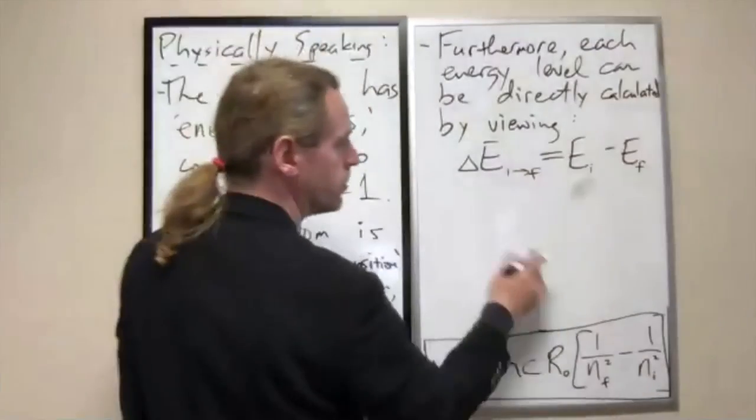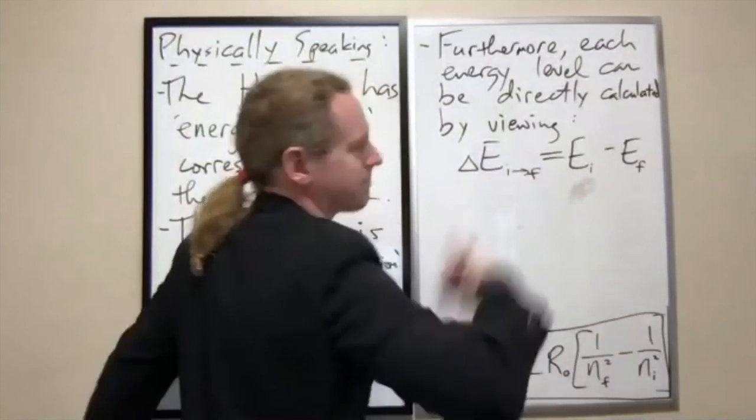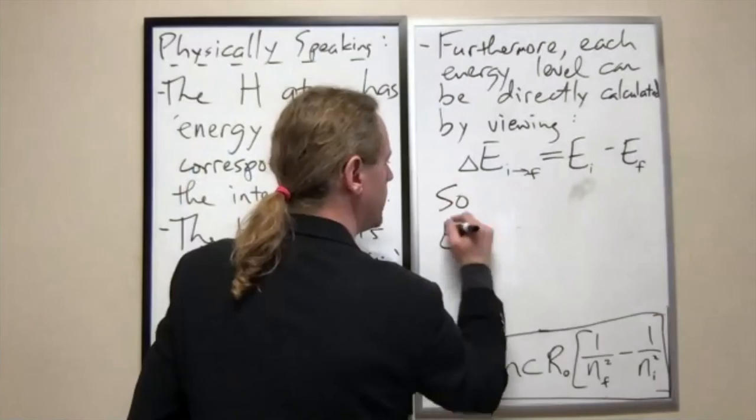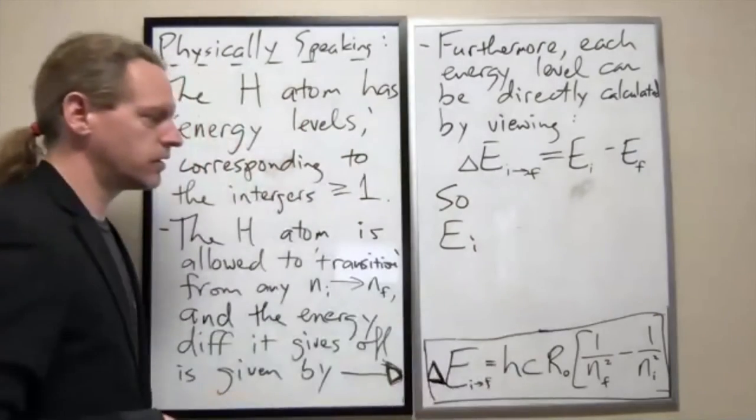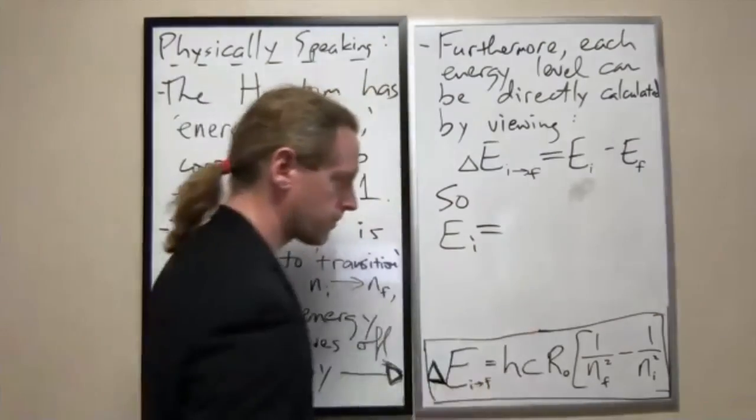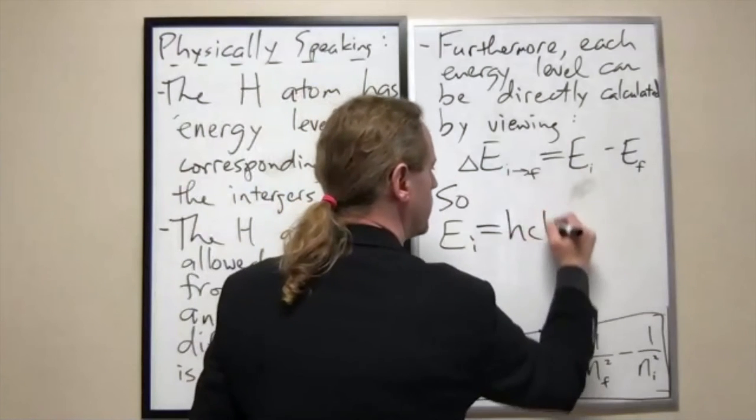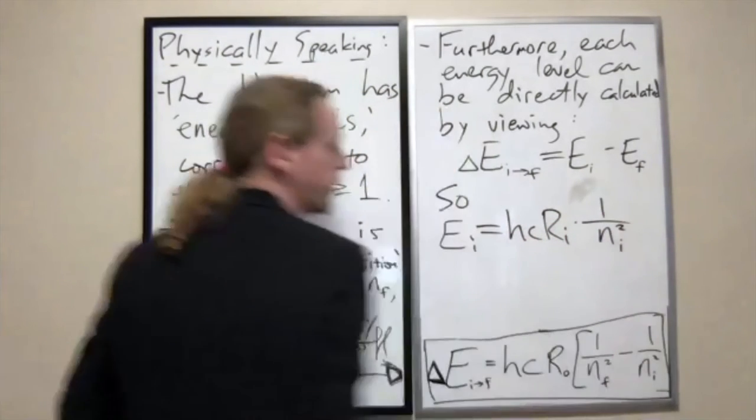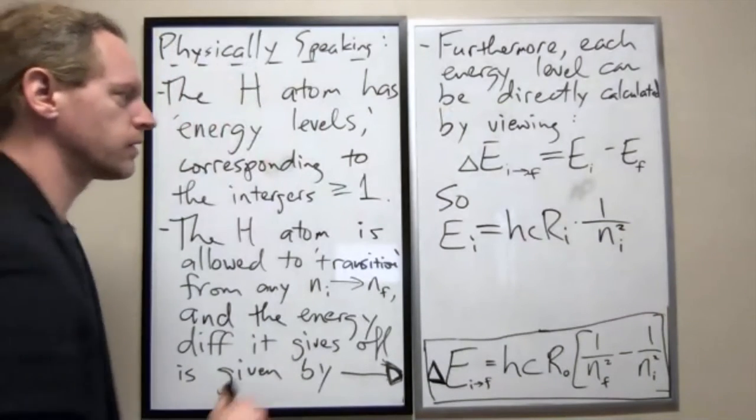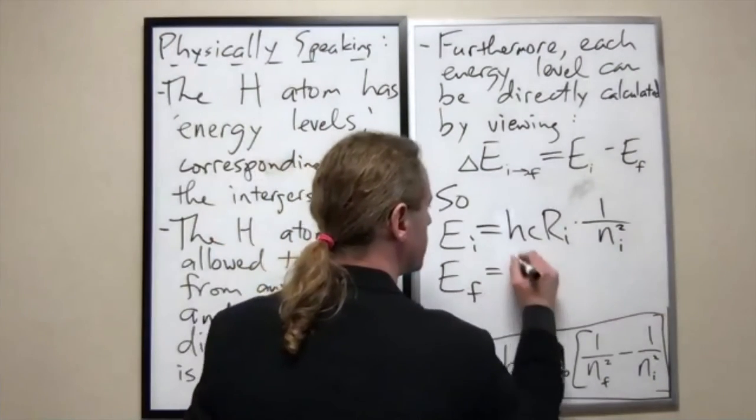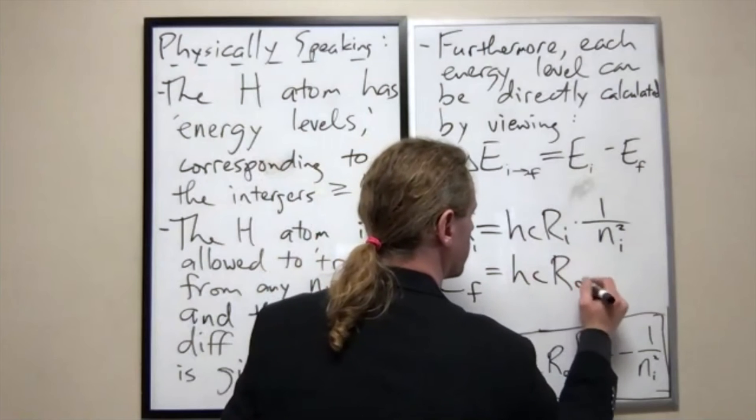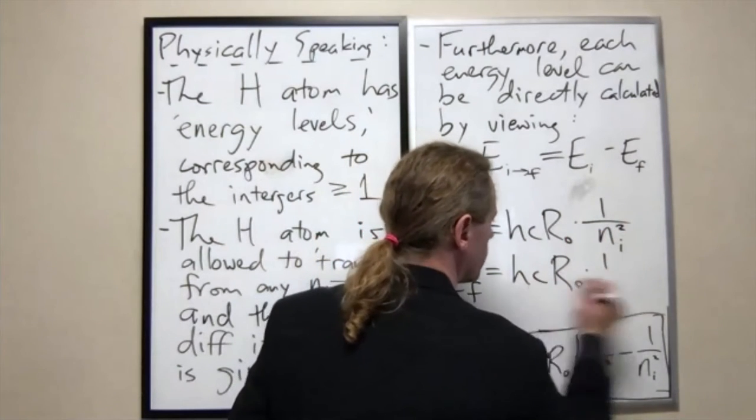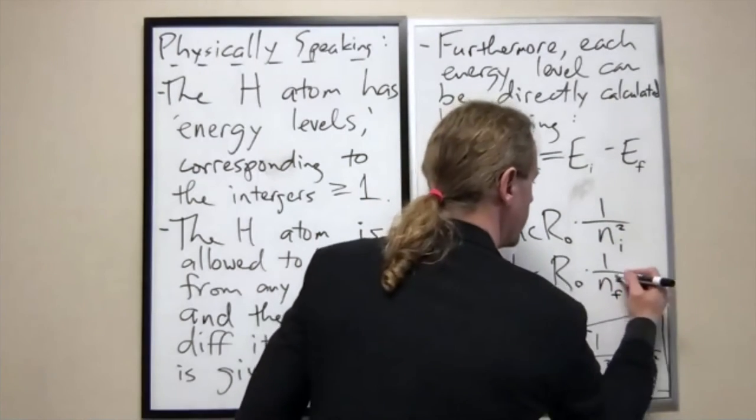Here's a punchline. EI we can write directly as this: hcR0 times 1 over NI squared. EF equals hcR0 times 1 over NF squared.